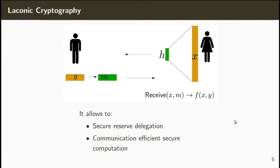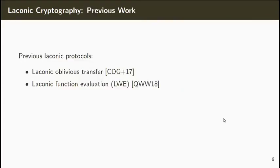The laconic cryptography framework allows for secure reverse delegation of computation, as opposed to fully homomorphic encryption, and allows for communication-efficient secure protocols. The framework was presented in the work of Cho et al., where a laconic oblivious transfer protocol is presented. This protocol can be based on several hardness assumptions such as DDH, LWE, or QR. Later, a laconic protocol to compute any function was presented in the work of Quach et al., based on the hardness of LWE with superpolynomial modulus-to-noise ratio. Both of these works use non-black-box techniques, which makes both schemes impractical for real-world applications.